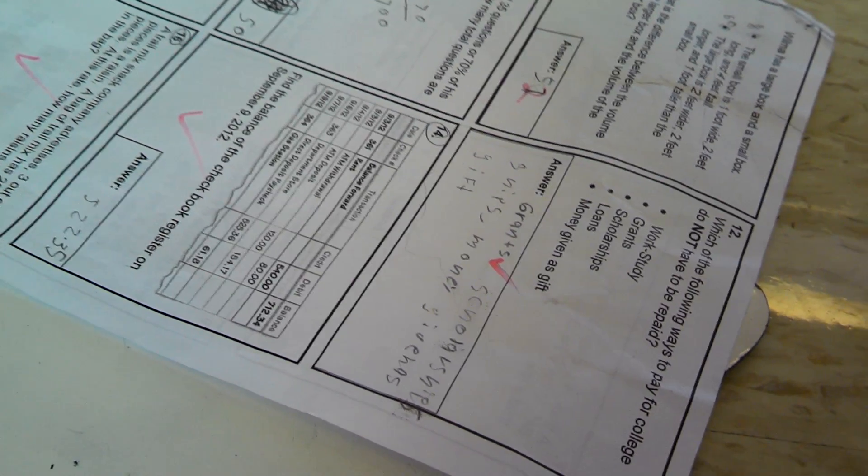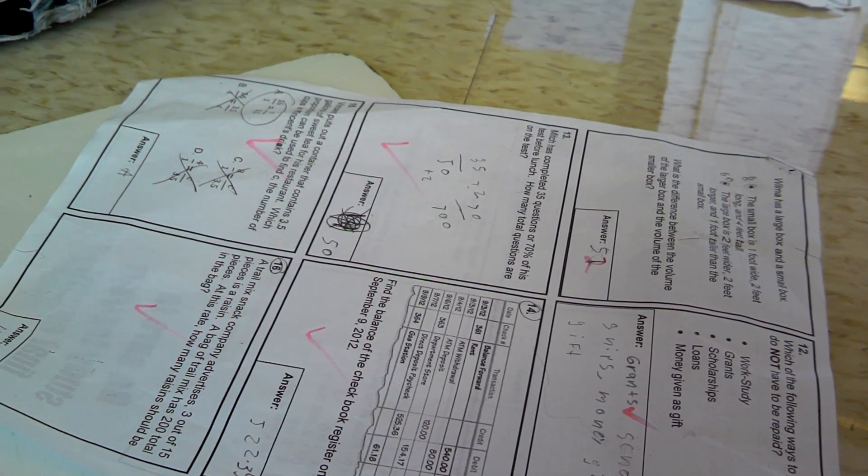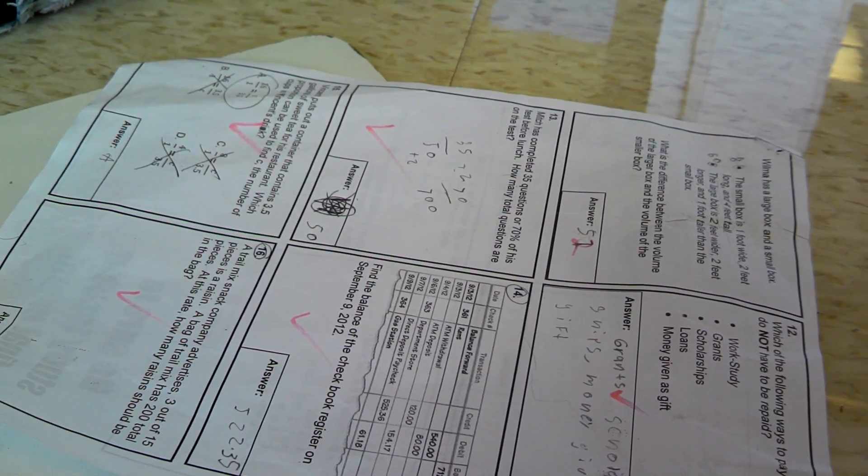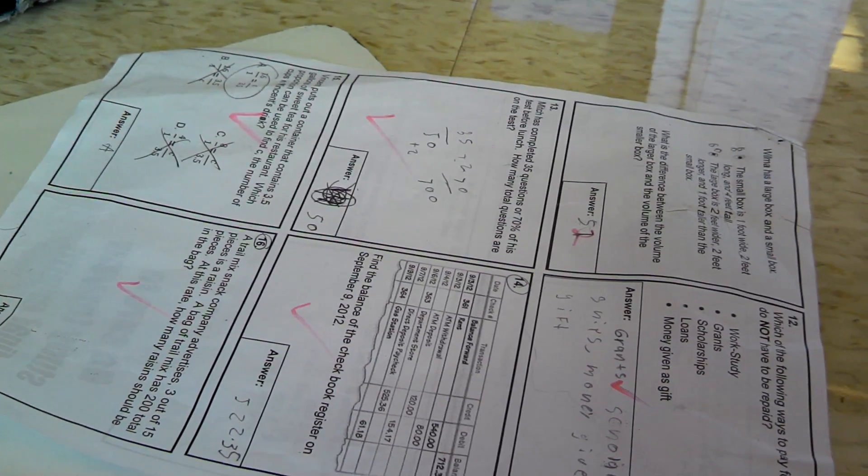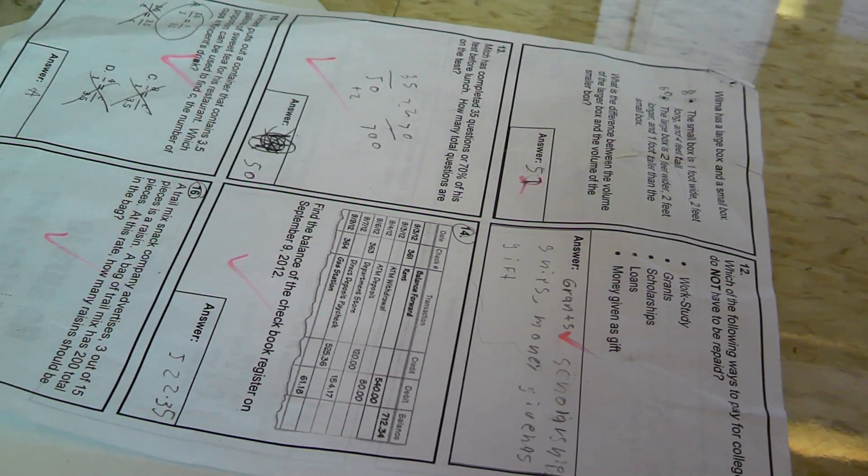Question 15. You can put out a container that contains 3.5 gallons of sweet tea for his restaurant. Which proportion can be used to find C, the number of cups in the container? It's number 1 because you need to use 24 like that.